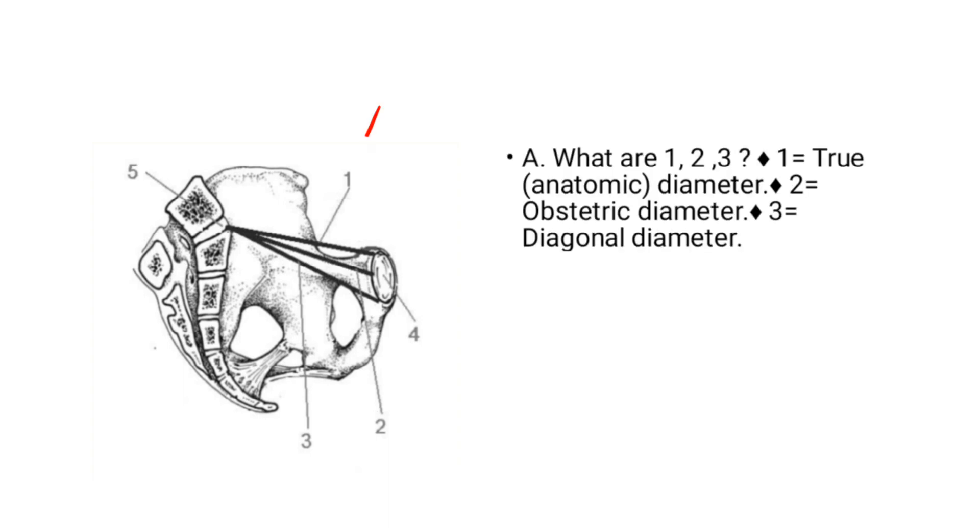What are 1, 2, and 3? So 1 is the true or anatomical diameter, then 2 is the obstetric diameter, then 3 is the diagonal diameter. You can even pause and actually try to see what we are talking about.